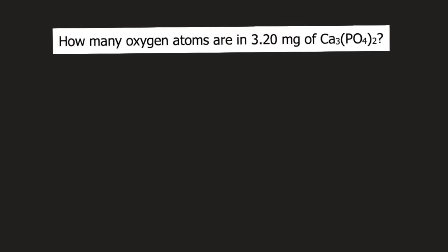How many oxygen atoms are in 3.20 mg of calcium phosphate? I will show you the steps. Starting from 3.20 mg of calcium phosphate, you need to convert this into grams of calcium phosphate, and from grams of calcium phosphate to moles of calcium phosphate.